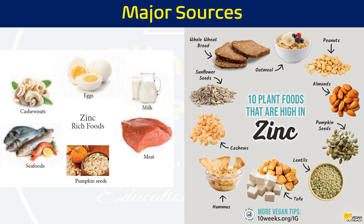The major food sources of zinc include egg, milk, meat, pumpkin seeds, seafoods, cashew nuts, and other kinds of nuts. Also oatmeal, peanuts, almonds, pumpkins, lentils, tofu, and hummus. These are the different food sources of zinc.